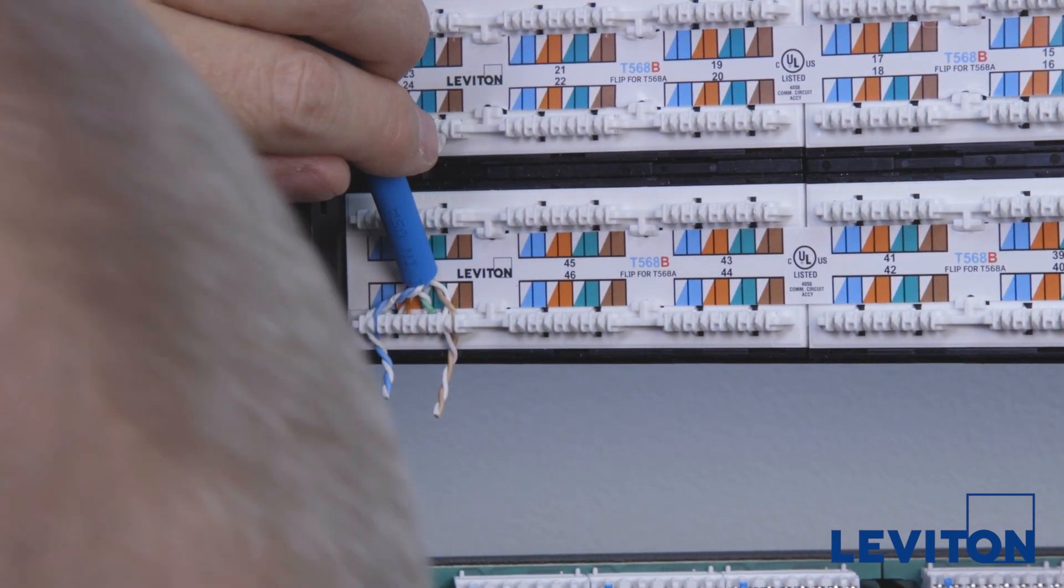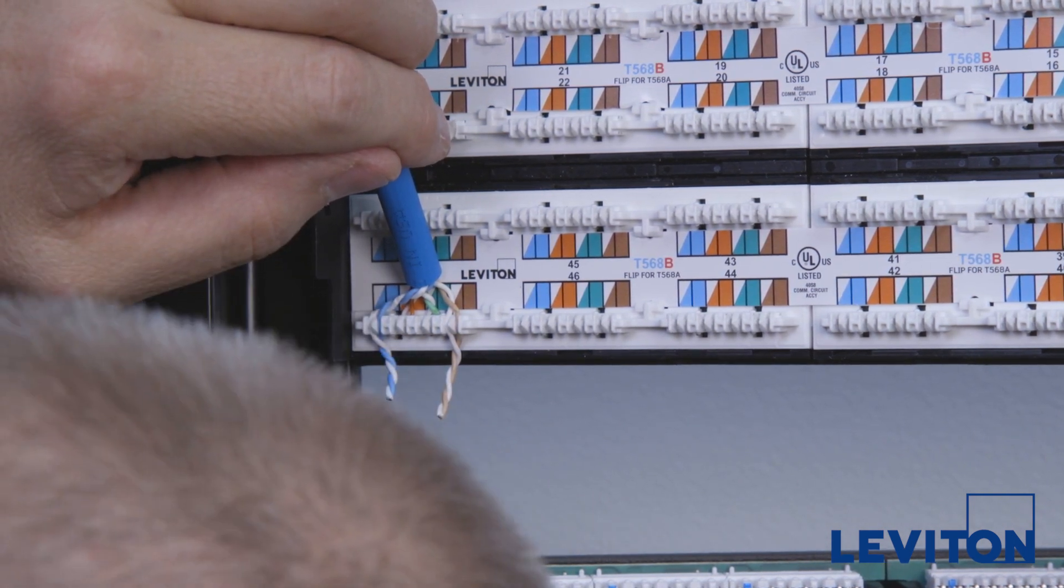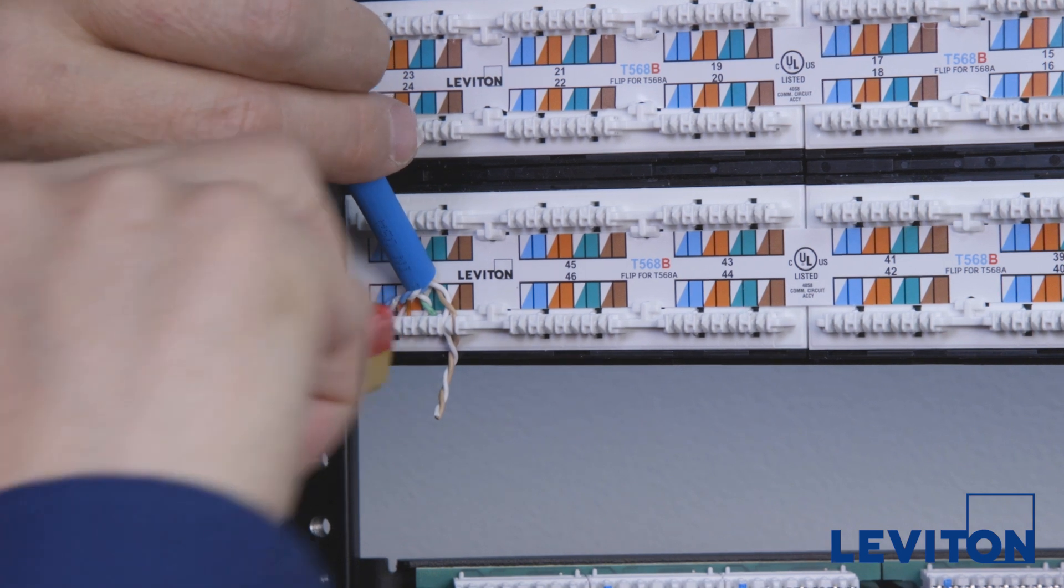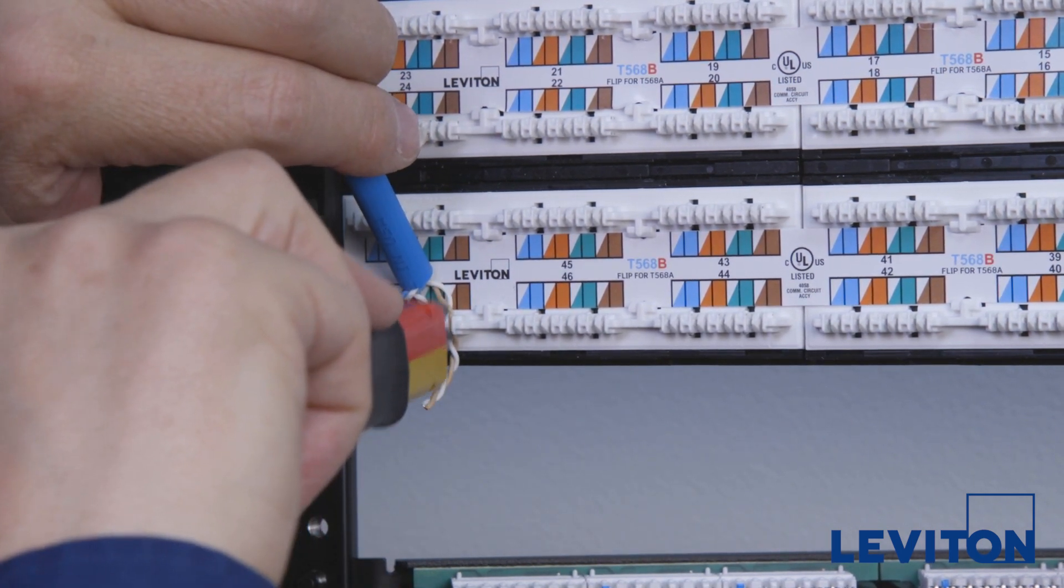With the first pair punched into place, it will be easier to work with the other pairs. Following the colors indicated on the IDC, use the pair separation towers to split and punch all of the remaining wires.